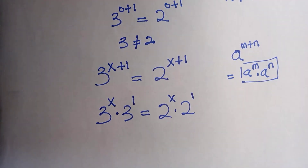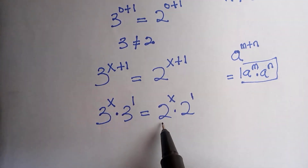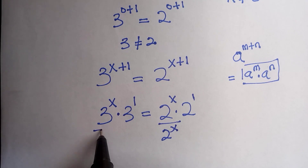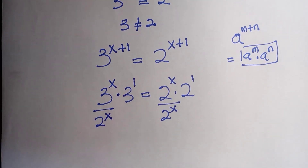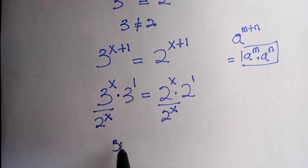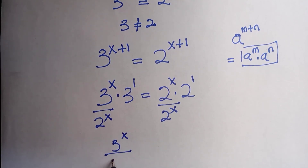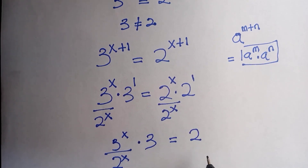Now we divide both sides by 2 raised to the power of x. We have 2 raised to the power of x divided by 2 raised to the power of x — canceling these two, we get 3 raised to the power of x divided by 2 raised to the power of x, times 3, equals 2.